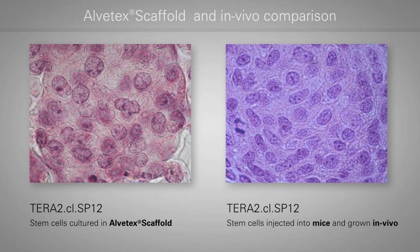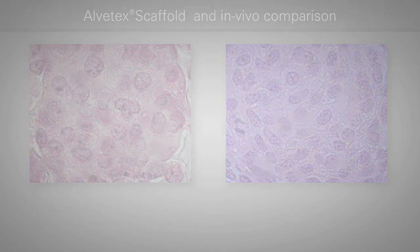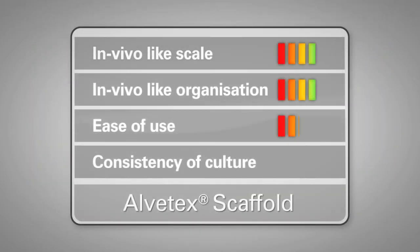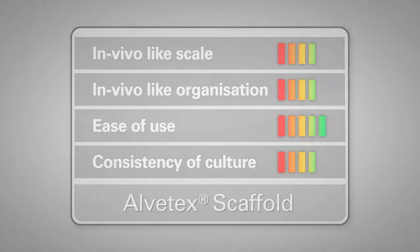We can score Alvatec Scaffold on each of the following criteria: the ability to accurately recreate the in vivo-like scale and the in vivo-like organization, the ease of use end users experience when attempting to use the product, and the consistency of the culture that occurs throughout the scaffold.